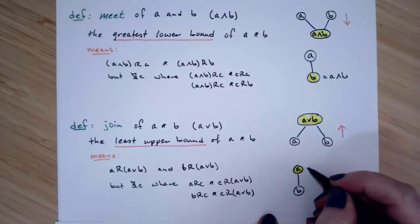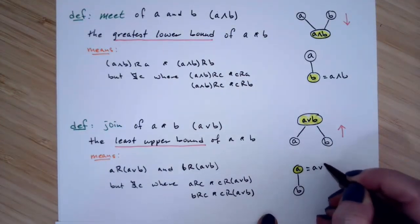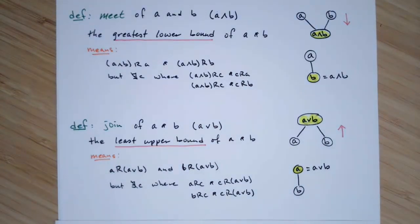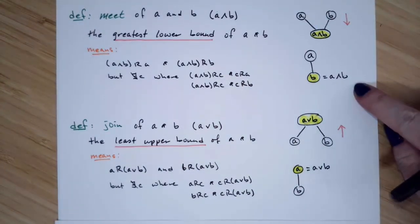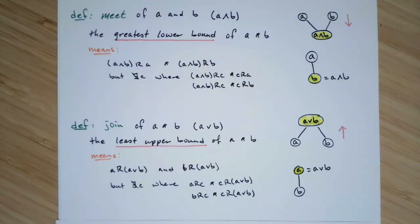when you have a little baby chain involved, the join is here, the top element of the chain where the meet was the bottom element of the chain. And that's the crash course of the definition of what a meet and a join is. When we get back together, we'll actually do examples of computing meets and joins in examples.